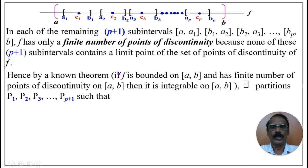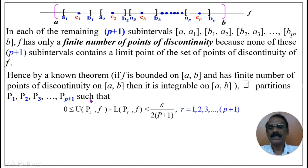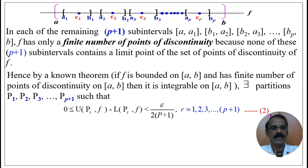Hence by a known theorem — if f is bounded on [a, b] and has a finite number of points of discontinuity on [a, b], then f is integrable on [a, b] — there exist partitions P₁, P₂, P₃, …, P_{p+1} such that 0 ≤ U(Pᵣ, f) − L(Pᵣ, f) < ε / (2(p+1)), for r = 1 to p+1, since there are p+1 subintervals. Let us call this expression (2).